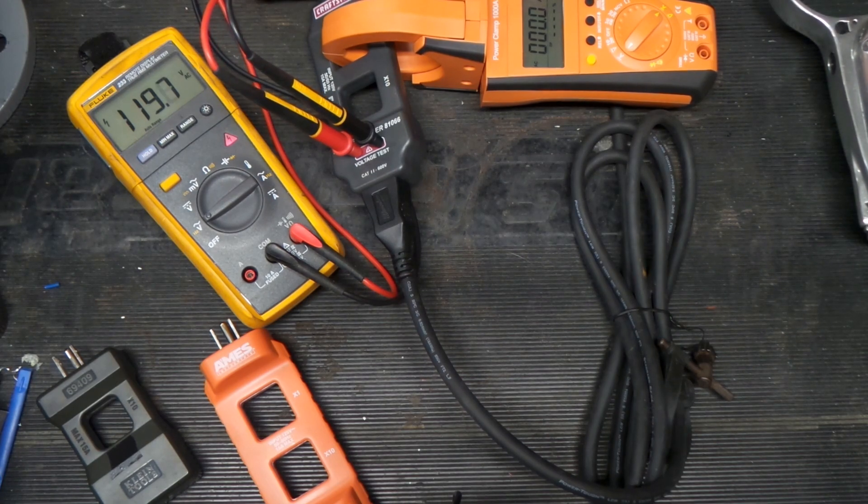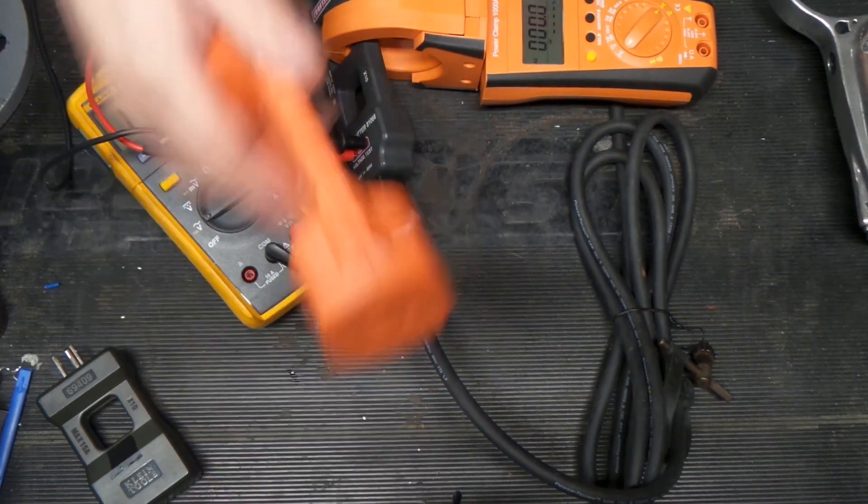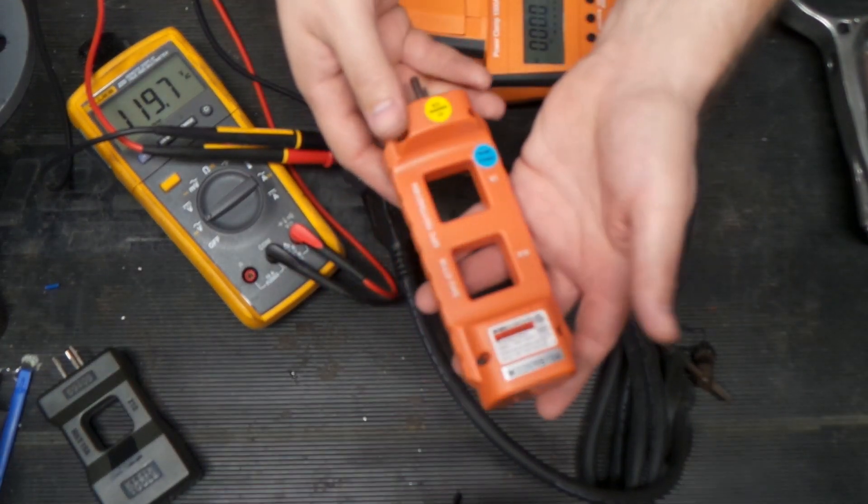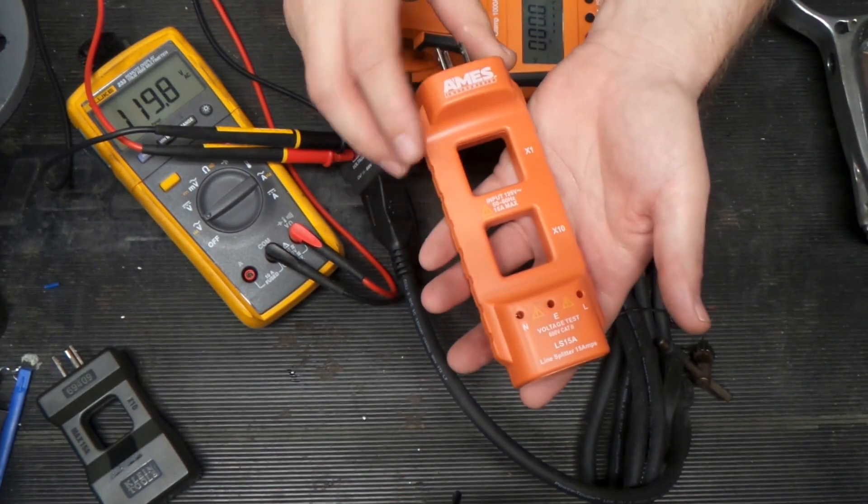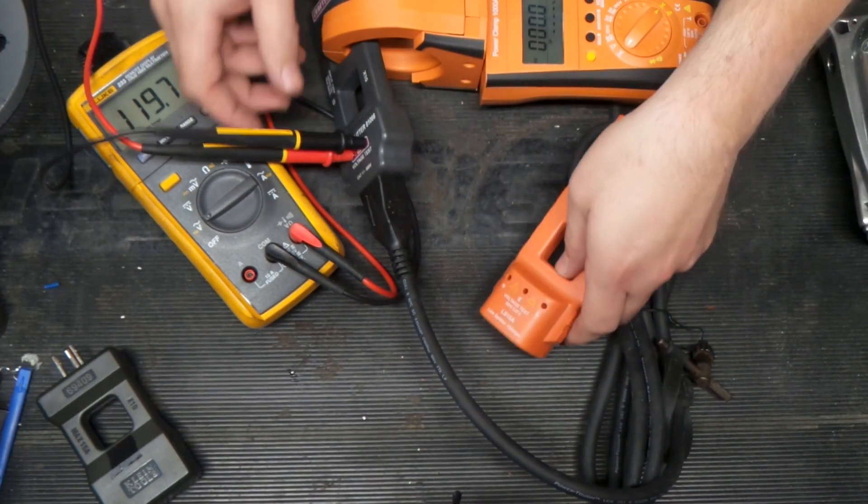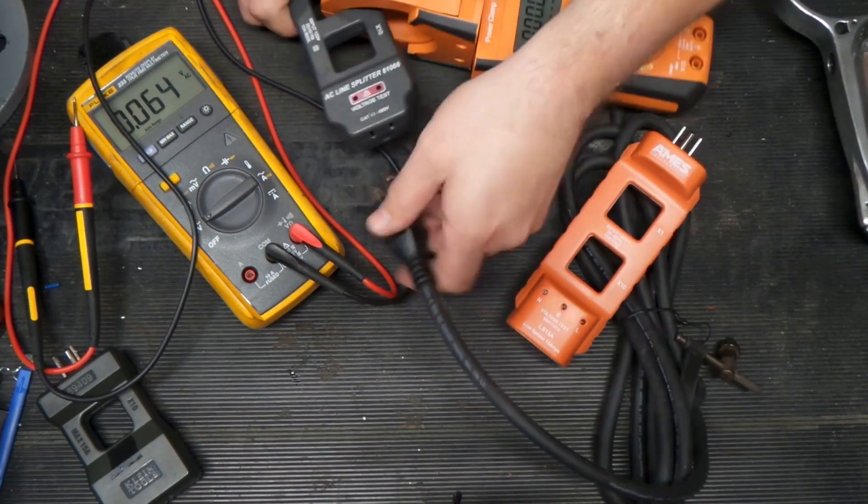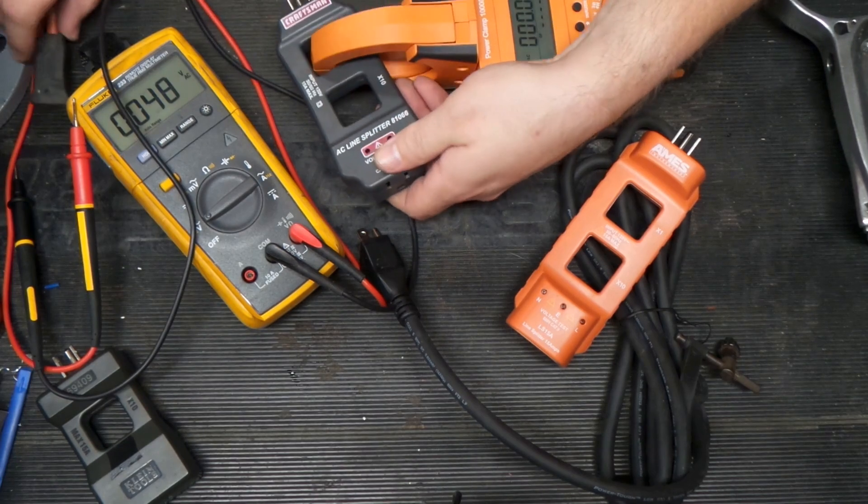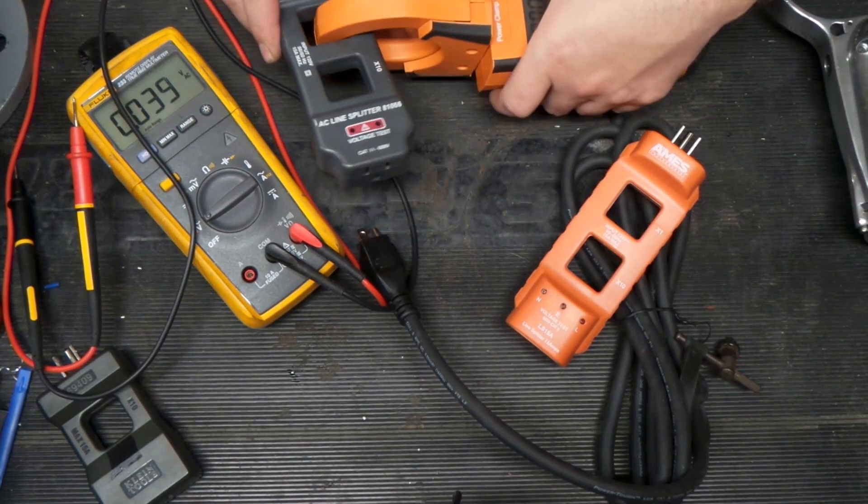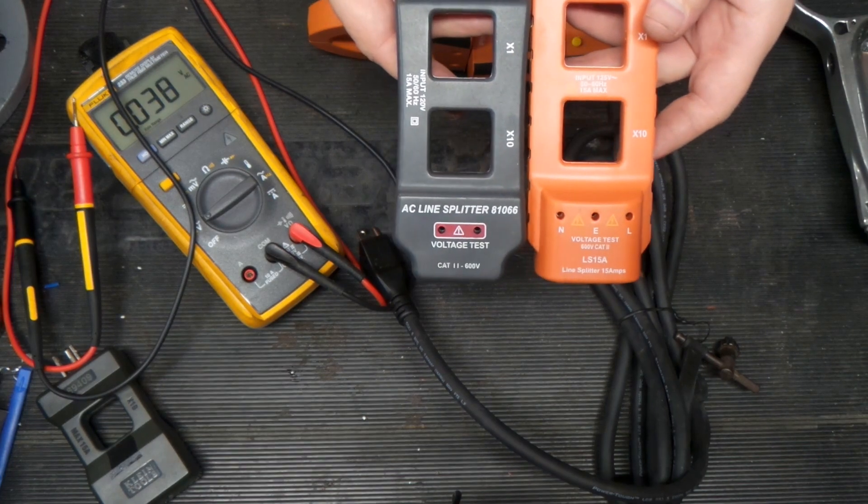And once the drill warms up, we'll see the same basic reading. So there you go. Quick look at current splitters, voltage and current. In the case of the Aims, now the Aims is kind of nice because it allows you to read to ground, and the Craftsman does not. So that is one thing that is a difference between the two.